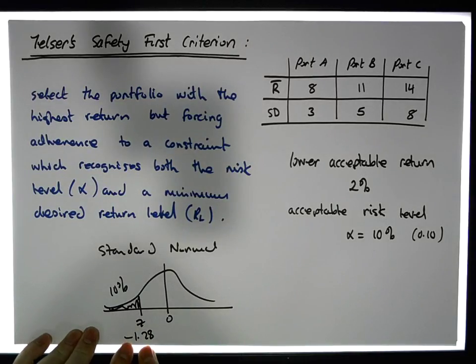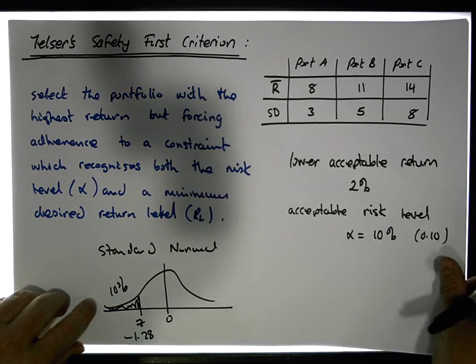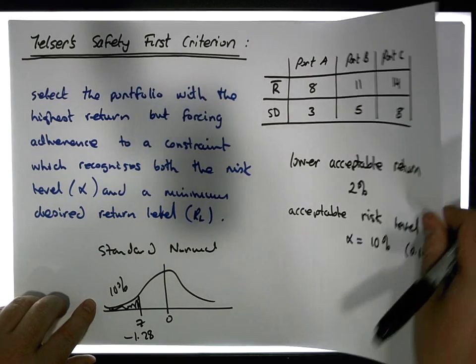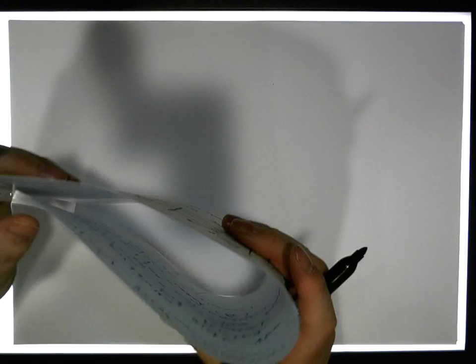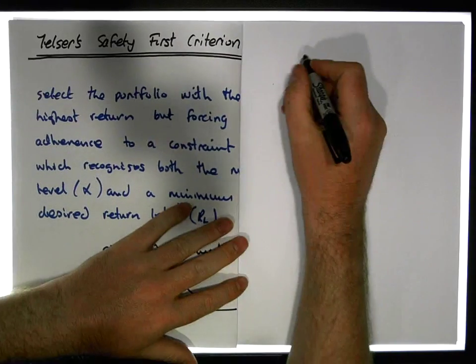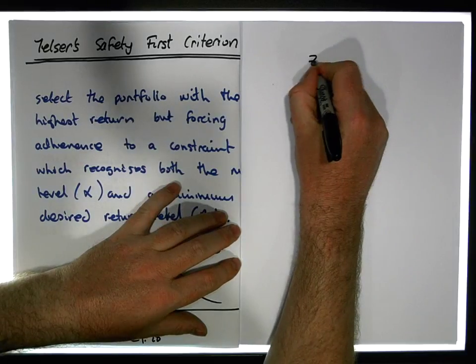Now for portfolios A, B, and C we need to calculate the expected return level. We know that z must be equal to the minimum return level minus the expected return divided by the standard deviation.